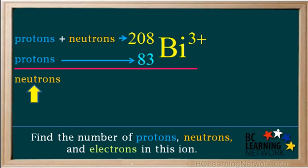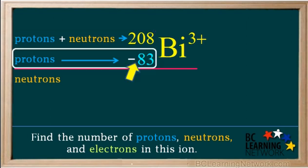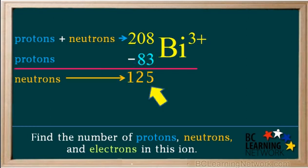Now we can calculate the number of neutrons. It's the total number of protons plus neutrons, or the mass number, 208, minus the number of protons, or the atomic number, 83, which comes out to 125.